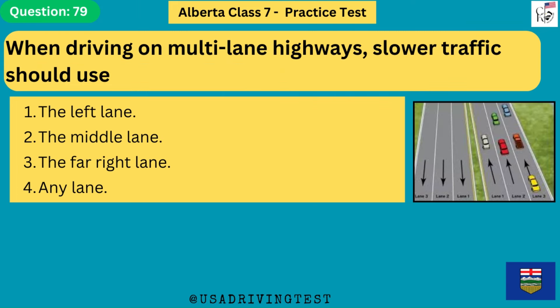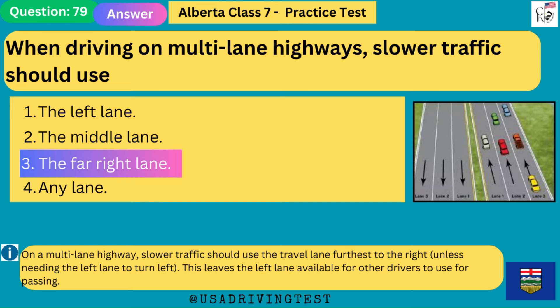When driving on multi-lane highways, slower traffic should use: 1. The left lane. 2. The middle lane. 3. The far right lane. 4. Any lane. The answer is 3: the far right lane. On a multi-lane highway, slower traffic should use the travel lane furthest to the right, unless needing the left lane to turn left. This leaves the left lane available for other drivers to use for passing.